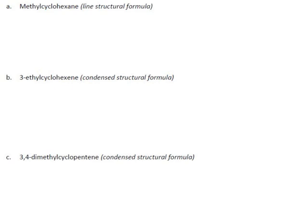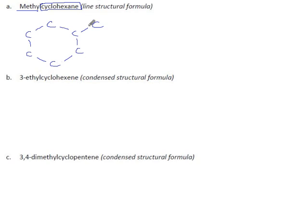We've named cyclics, now it's time to draw them. Methylcyclohexane: cyclohexane means six carbons in a ring, so make a hexagon. Hexane means all single bonds. Methyl means there's a methyl group on one of these carbons, and no matter where we put it, that's carbon number one — you can't misplace a methyl group in a cyclic like this when it's the only substituent. For a line structural, we draw the hexagon without the C's and put a methyl group somewhere on it.